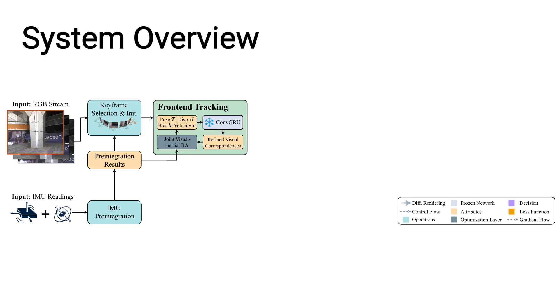The newly selected keyframe is added to the local frame graph. A joint visual-inertial bundle adjustment is then performed to refine the pose, depth, IMU biases, and velocity of all keyframes in the graph.